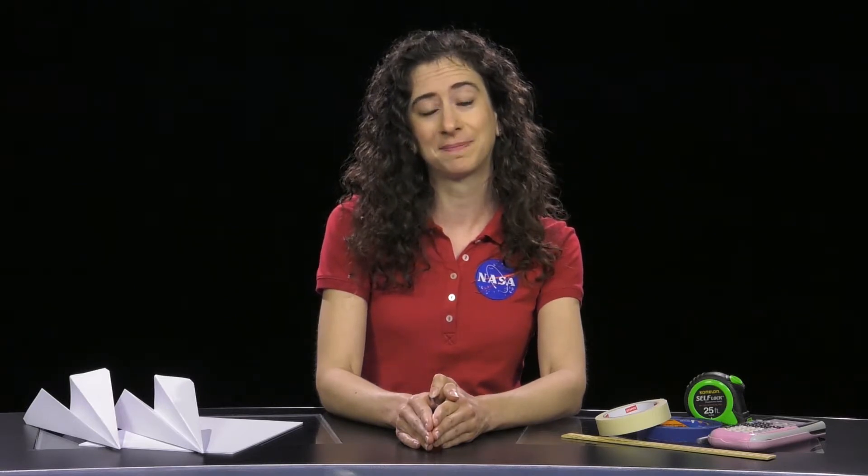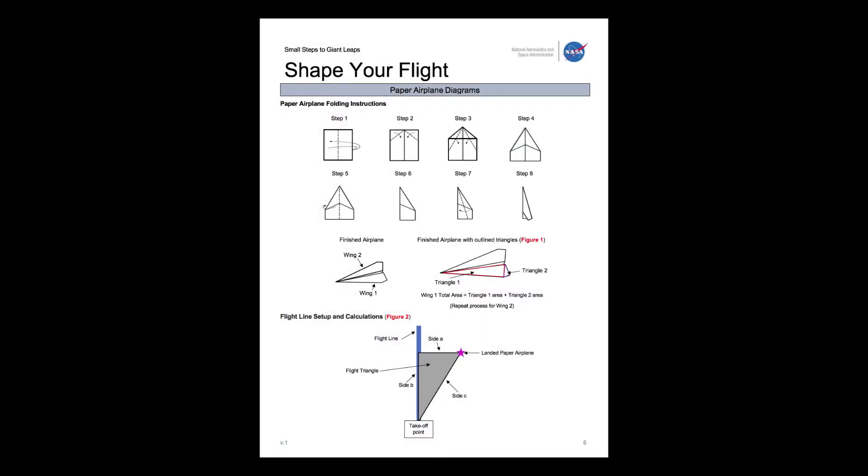Keep in mind this activity does require a large empty space for launching the students' airplanes. Next, you'll want to divide your students into groups of two to four. Students will construct a paper airplane in their groups by following the instructions included on page five of the activity guide.